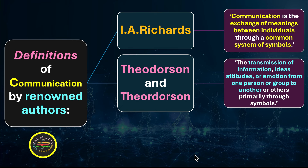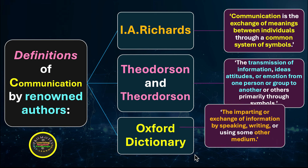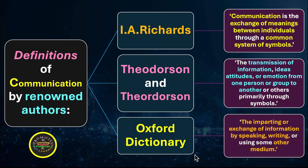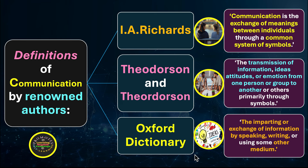Here, symbols refers to language — through the same language. The Oxford Dictionary defines communication as 'the imparting or exchange of information by speaking, writing, or using some other medium.' These are some of the most important definitions by renowned authors. We can see how two individuals are engaged in exchange of meanings, how transmission of information goes from one person to a group, and how ideas are imparted either through speaking or writing depending upon the medium you choose.